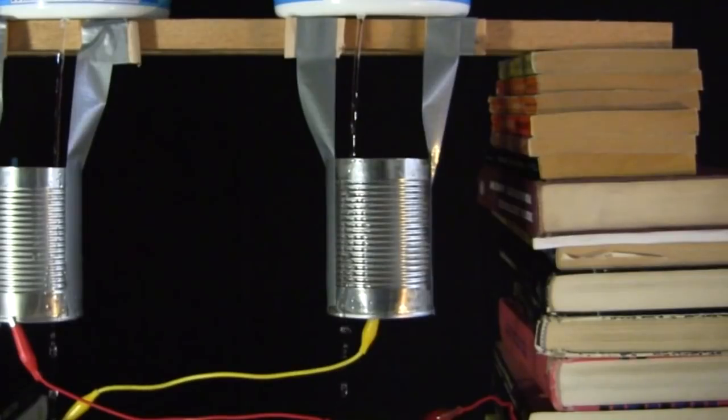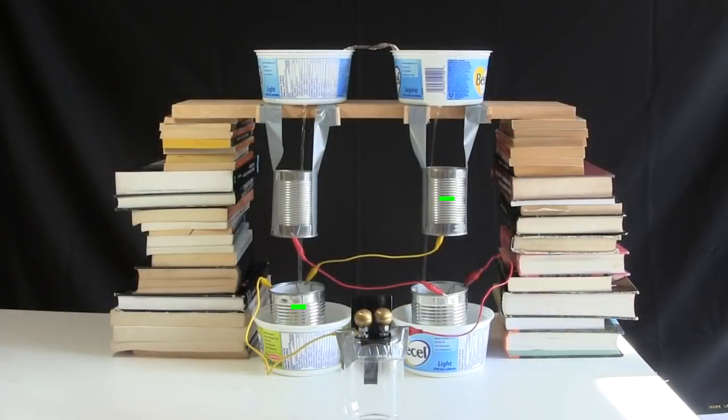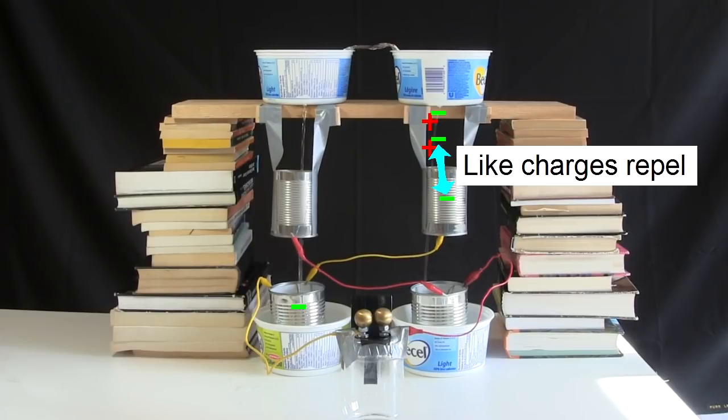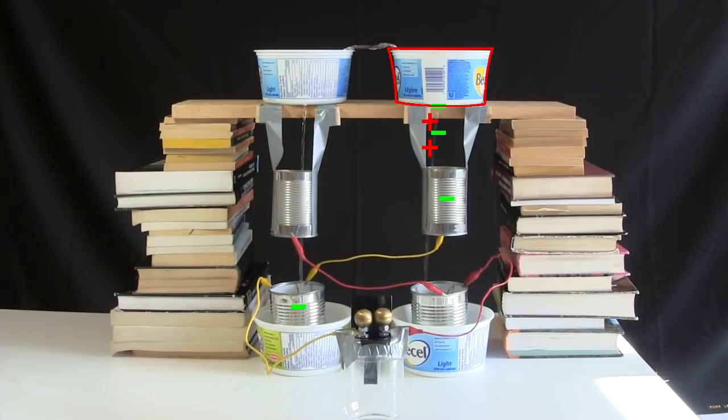The can is positioned so it's at the transition point. Since this can is negatively charged, that means negative charges in the water stream will be repelled. That's because like charges repel each other. And the only place they can go is back up into this container.